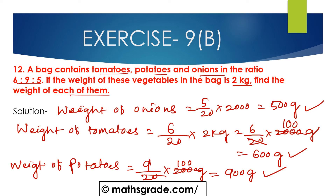If we add the weights of all these vegetables — 500 g, 600 g, and 900 g — we get 5 plus 6 is 11, and 11 plus 9 is 20, that is 2000 g, which equals 2 kg. So our answer is correct.